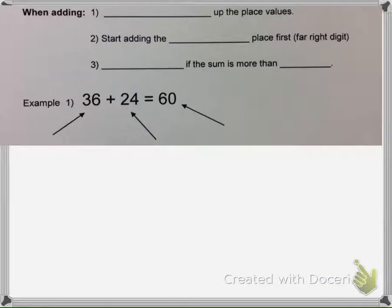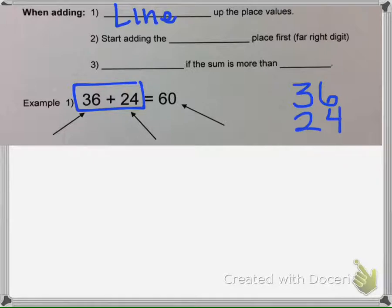All right, so when we add numbers, we always want to line up the place values. So if we were going to add 36 + 24, we would need to take the 6 and the 4 here and line them up because they are both in the same place value, they're in the ones, they're both ones digits.